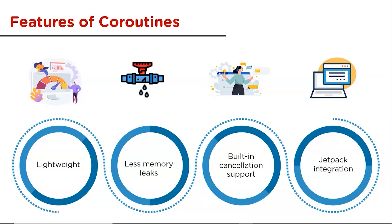The first feature of Kotlin coroutines is that they are lightweight. Due to support for suspension, we can run many coroutines on a single thread without blocking that thread. Coroutines have a collection of threads that can be used when required — when a task is done, the thread is returned to the collection and reused when needed.